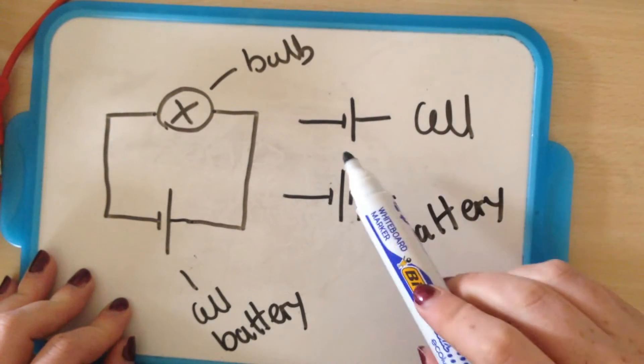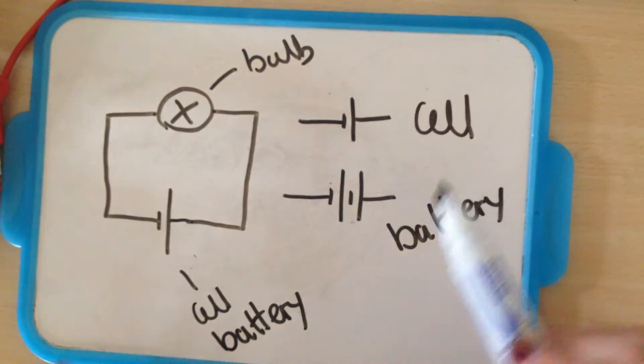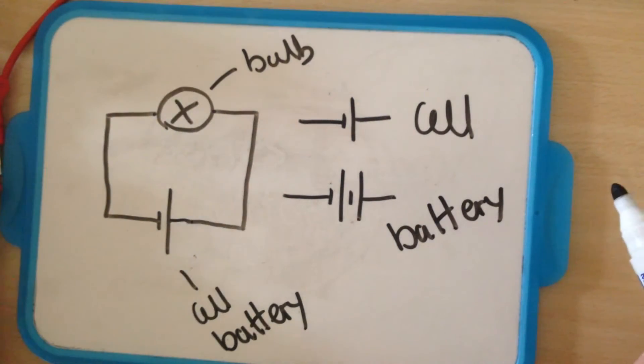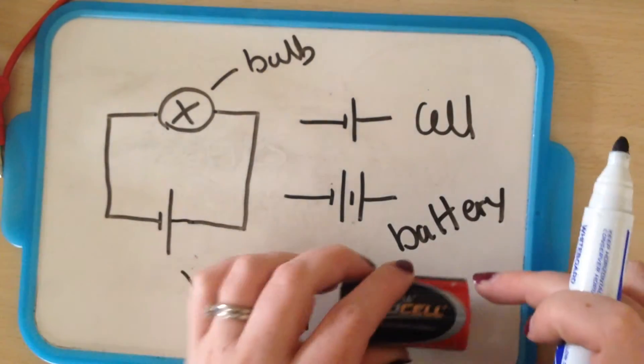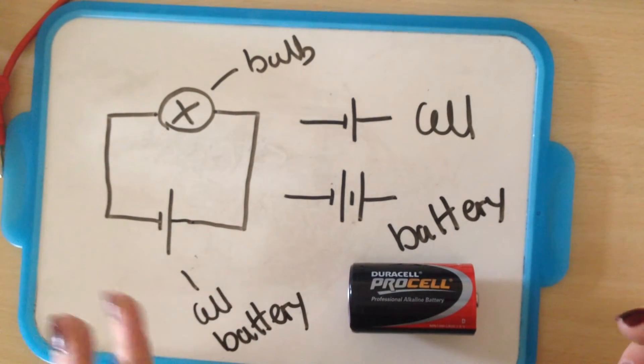Now the difference between a cell and a battery is a cell is kind of like a single component, whereas a battery is more than one cell put together. So all I've got here to show you are batteries; I'm afraid I don't have any cells.